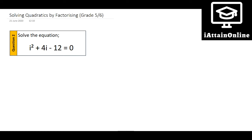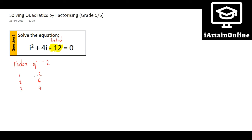The second example — this is where signs are really important. We still want a product of negative 12. This is why it's really important to include the sign that comes before it, because we want the factors of negative 12. If I just wrote out my factors of 12 — 1×12, 2×6, 3×4 — multiplying those together I'm always going to get a positive number. So to multiply two numbers together and get a negative answer, one of the two factors needs to be negative: negative 1 times 12, negative 2 times 6, negative 3 times 4.